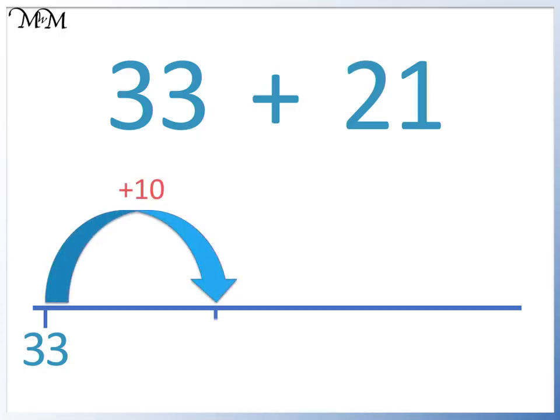Adding 10 is easy. 33 ends in a 3, so we know our number ends in a 3. We go from 33 to 43. We make a second jump to add 10 again. We go from 43 to 53.